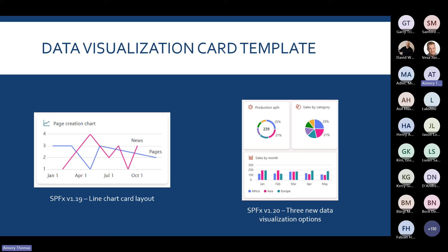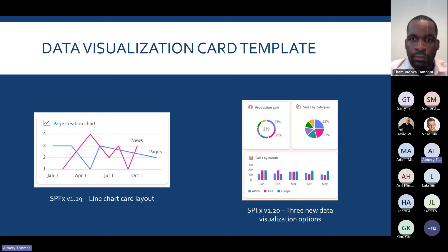Before the demo, a quick overview of the data visualization card template with SharePoint Framework. It was first introduced with version 1.19, but we only had a line chart card layout. With SharePoint Framework version 1.20, which has been generally available for a few days now, we have three more new data visualization options: the bar chart, the donut chart, and the pie chart we'll see today.